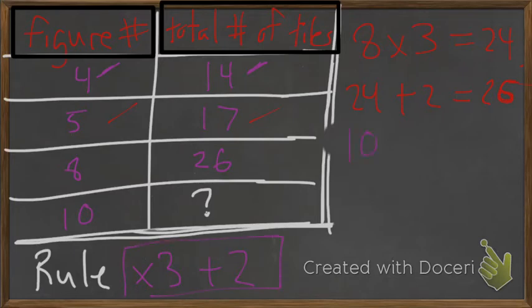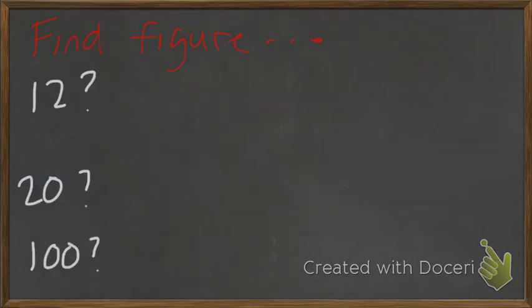Now, if we do it for 10, 10 multiplied by 3 equals 30, and 30 plus 2 equals 32. Alrighty then. Hope I didn't make another mistake there. Anyways, if we wanted to find figure 12, or figure 20, or figure 100, we know all we have to do is take that value and apply it to the rule. So, 12 multiplied by 3 plus 2 would give us 38. If we want to do it with 20, 20 multiplied by 3 plus 2 would give us 62. And 100 multiplied by 3 plus 2 equals 302. No mistakes there.